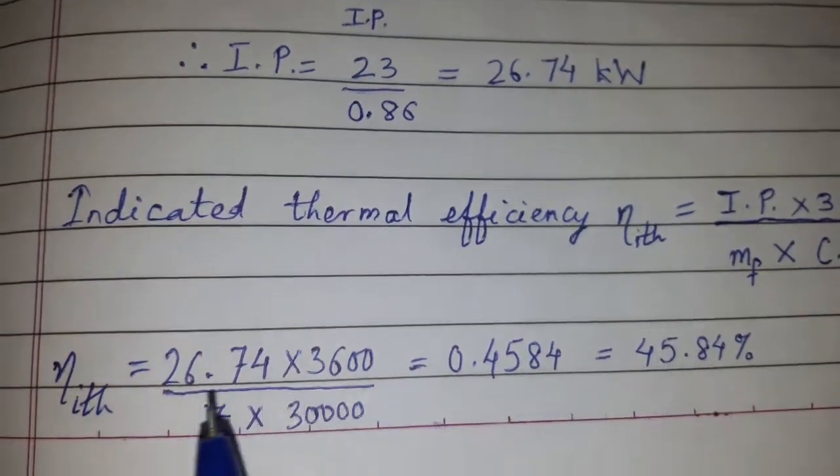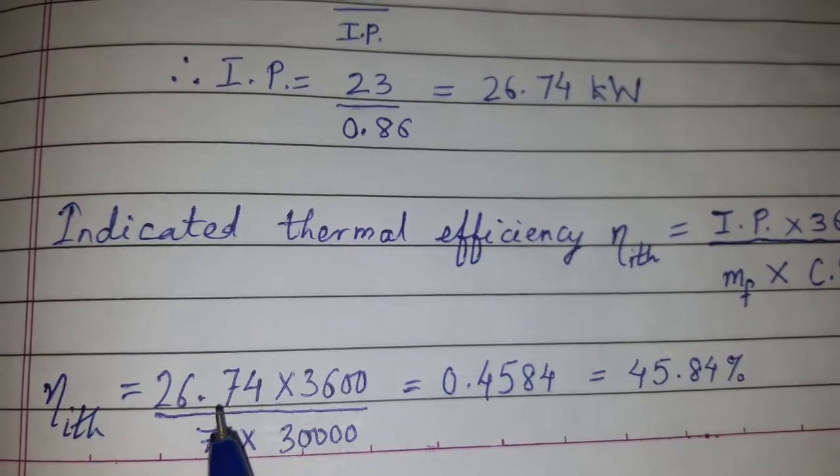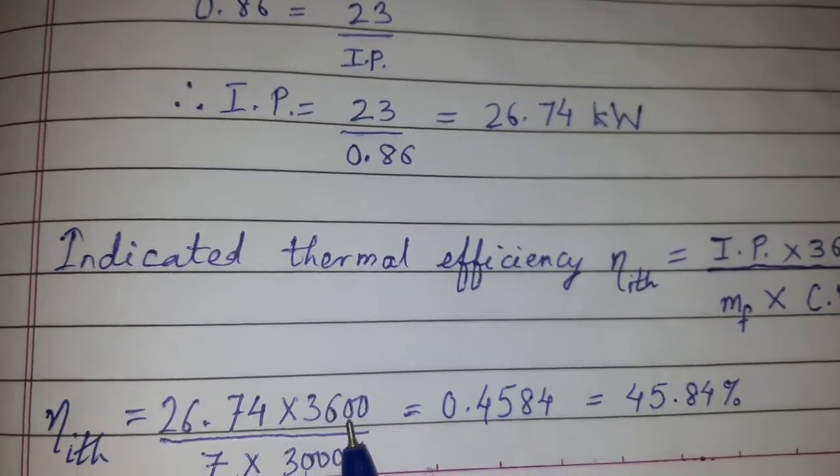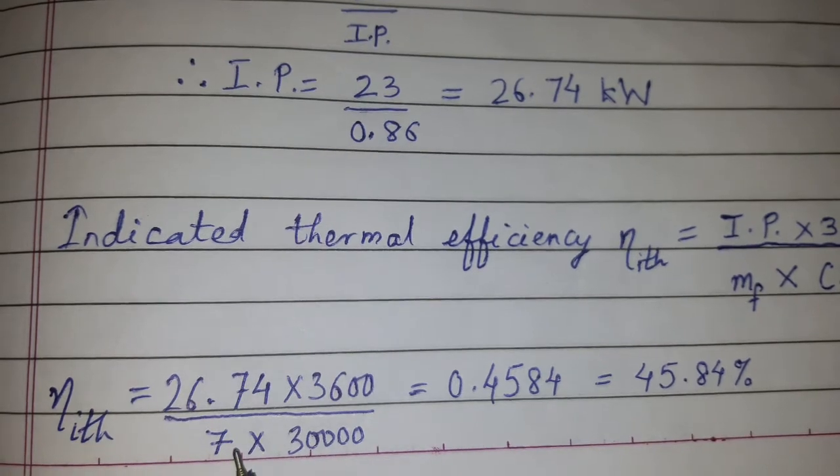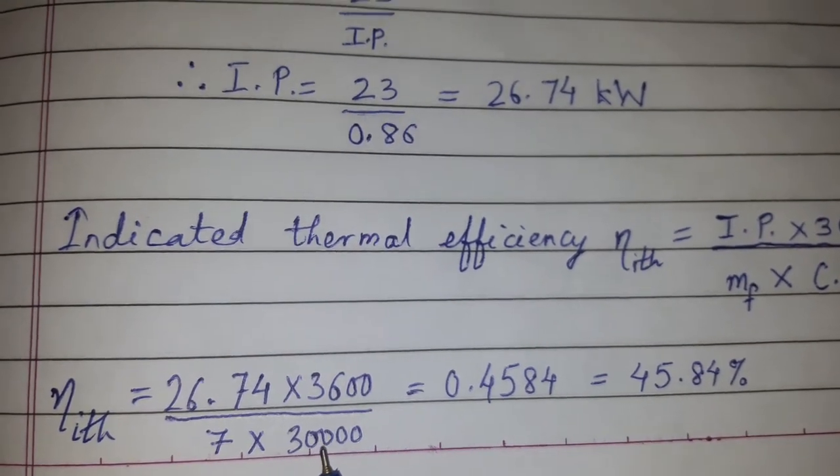Now we'll calculate indicated thermal efficiency: η_ith = (26.74 × 3600) / (7 × 30,000).